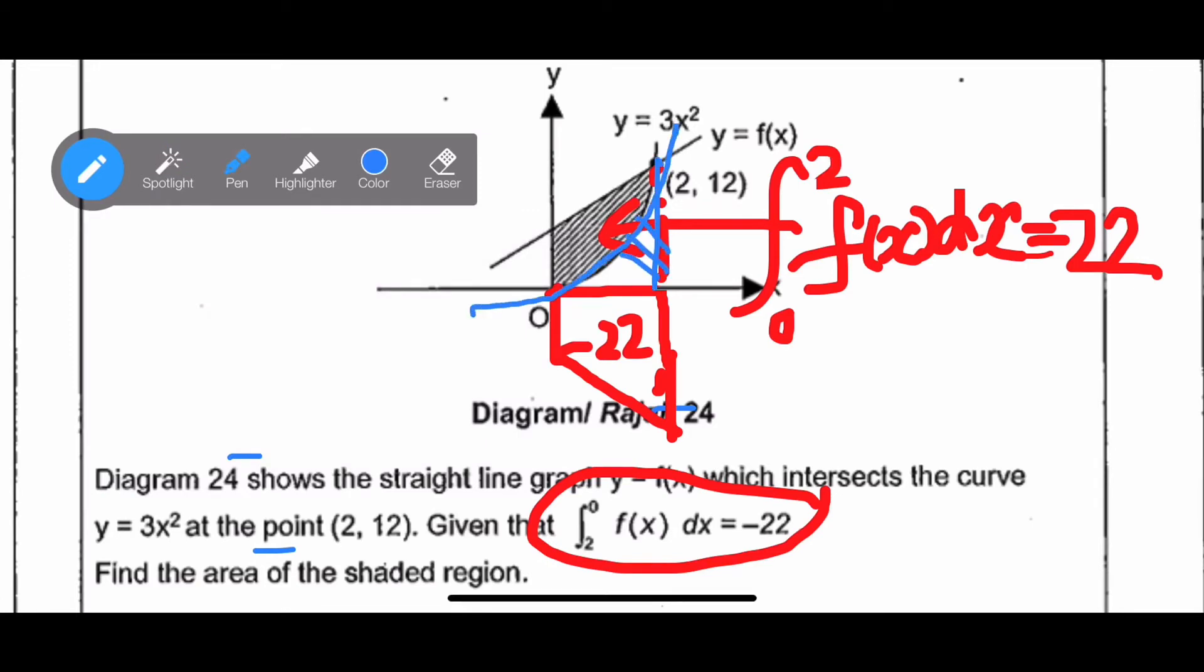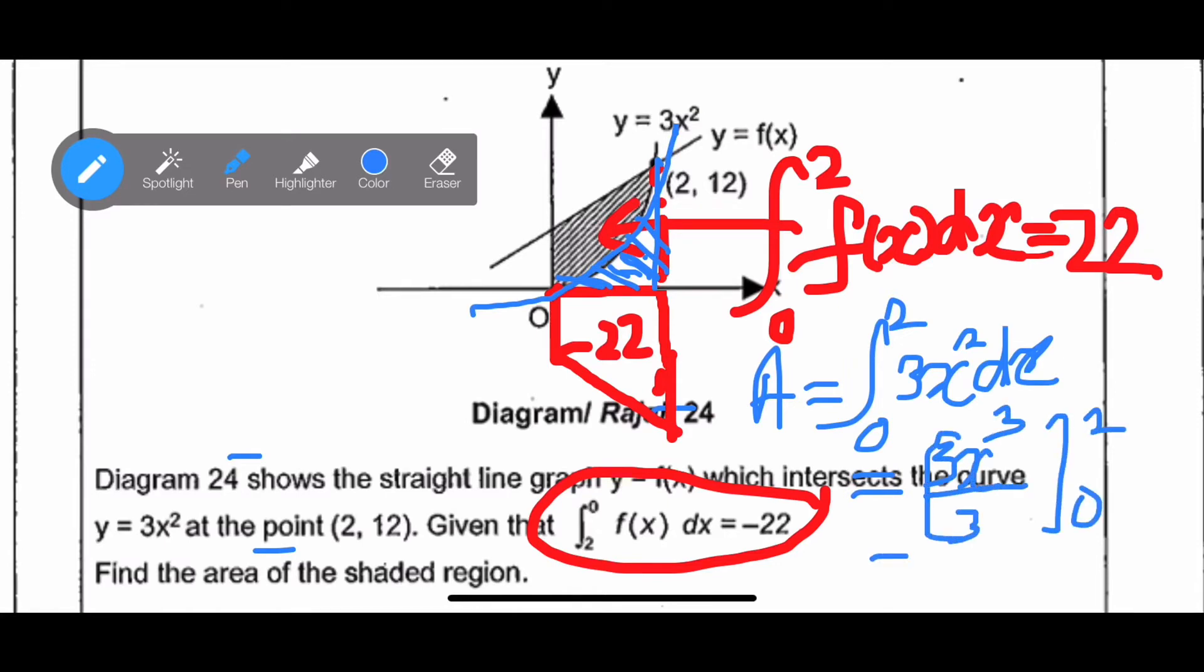So we need the area for the trapezium so that we can minus out the area which I shaded in blue color. The area shaded in blue color is the area under the curve. So the only way to find the area under the curve is use integration. So I will integrate from 0 to 2 for 3x squared dx.